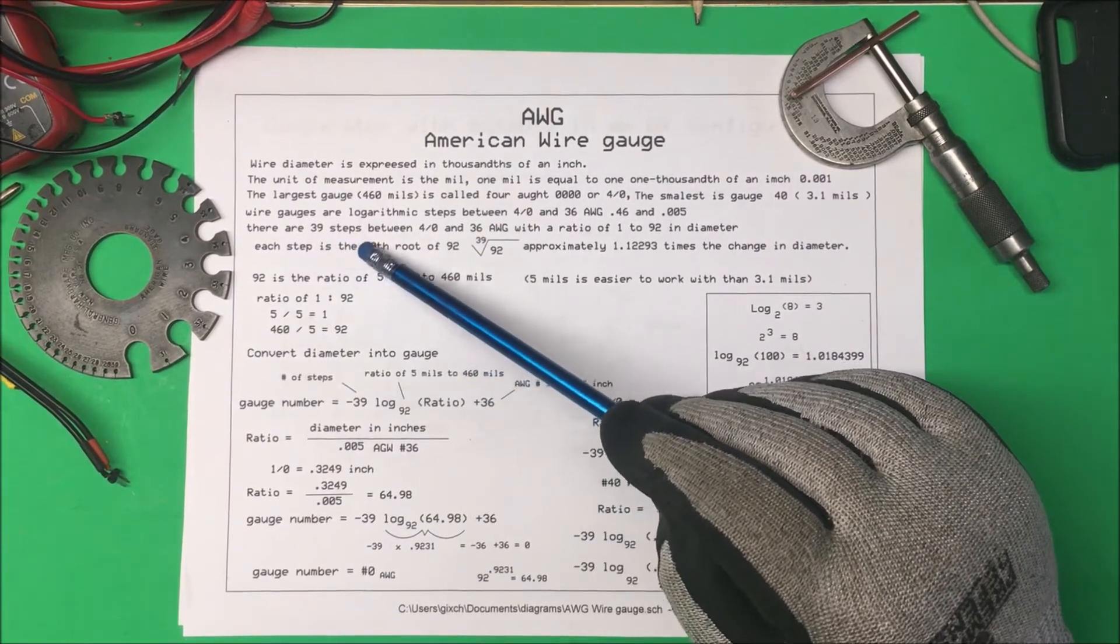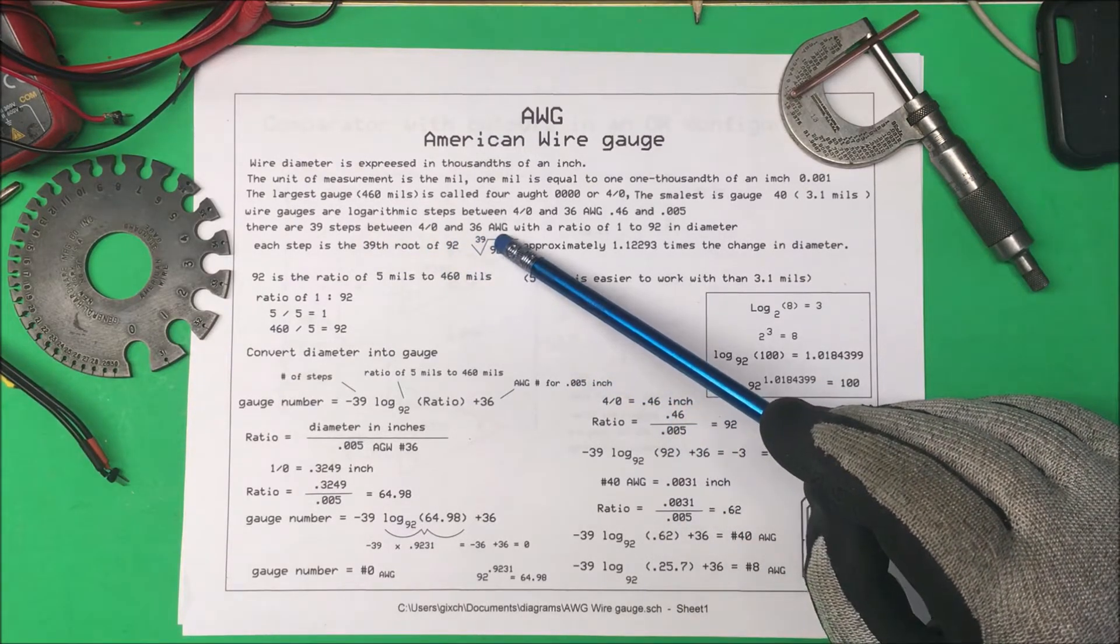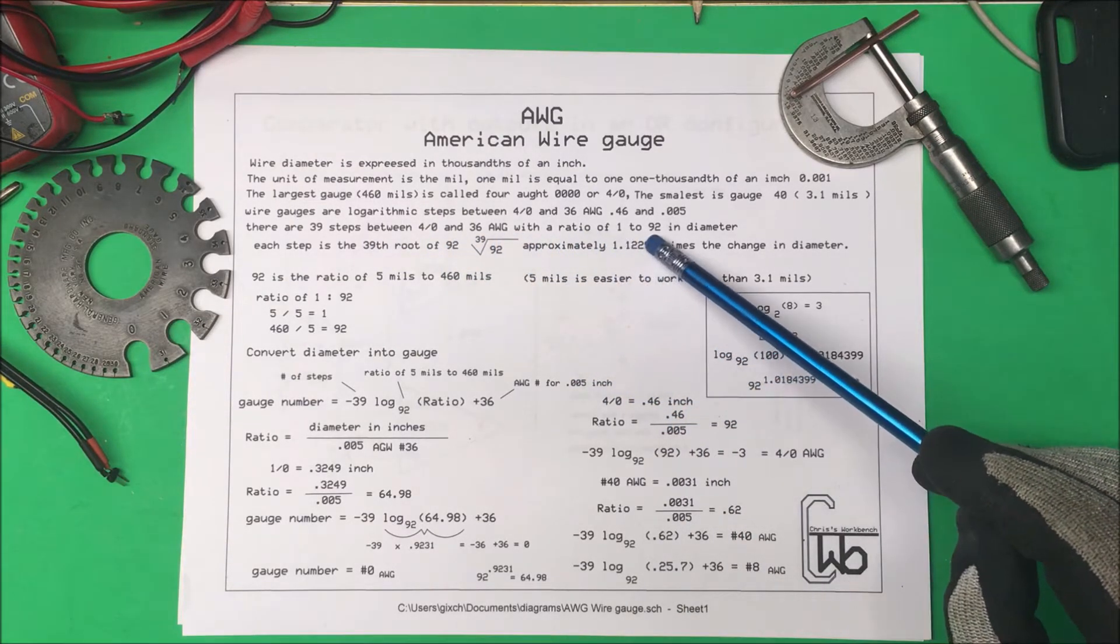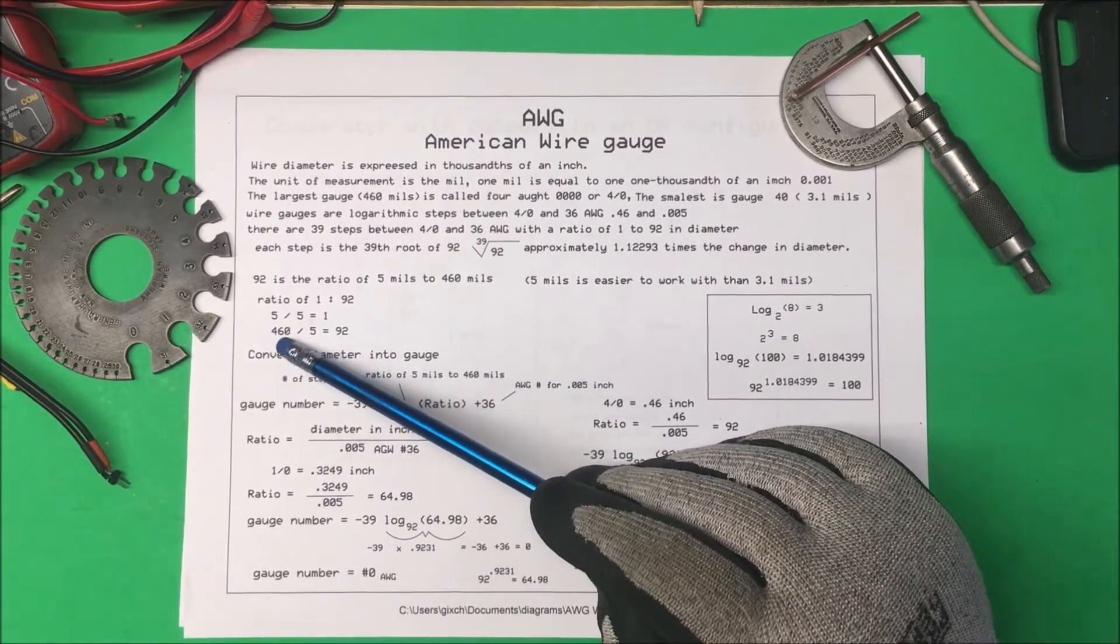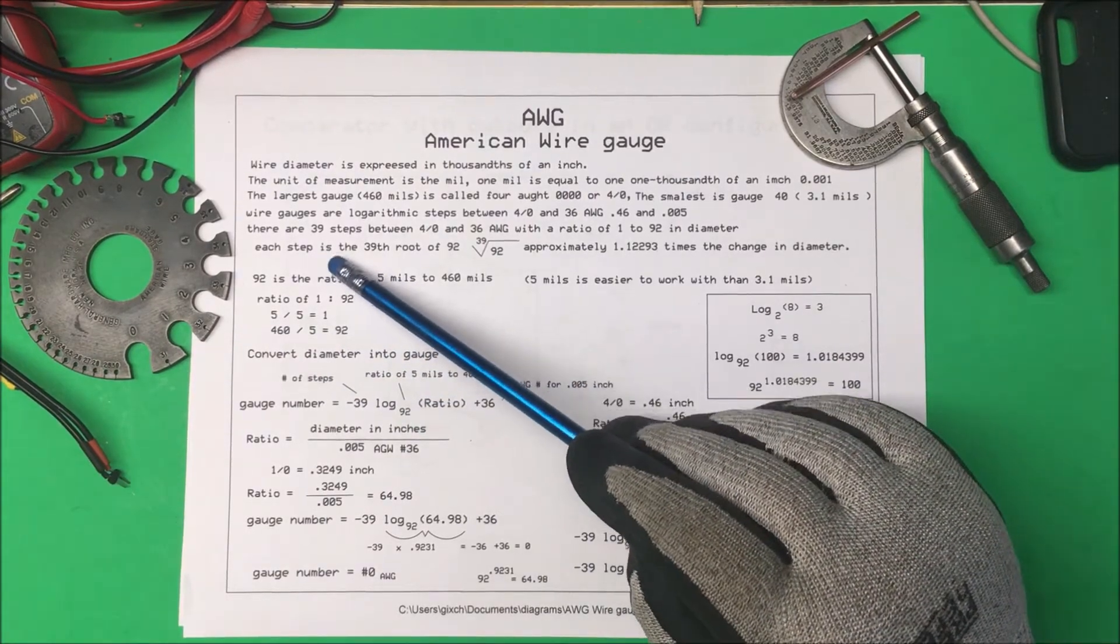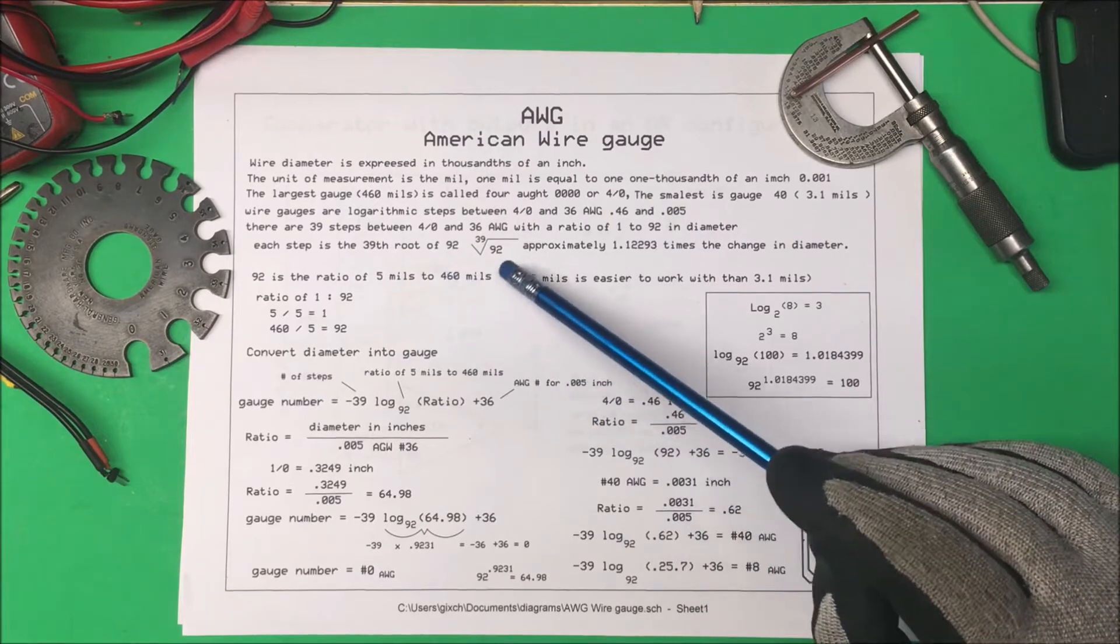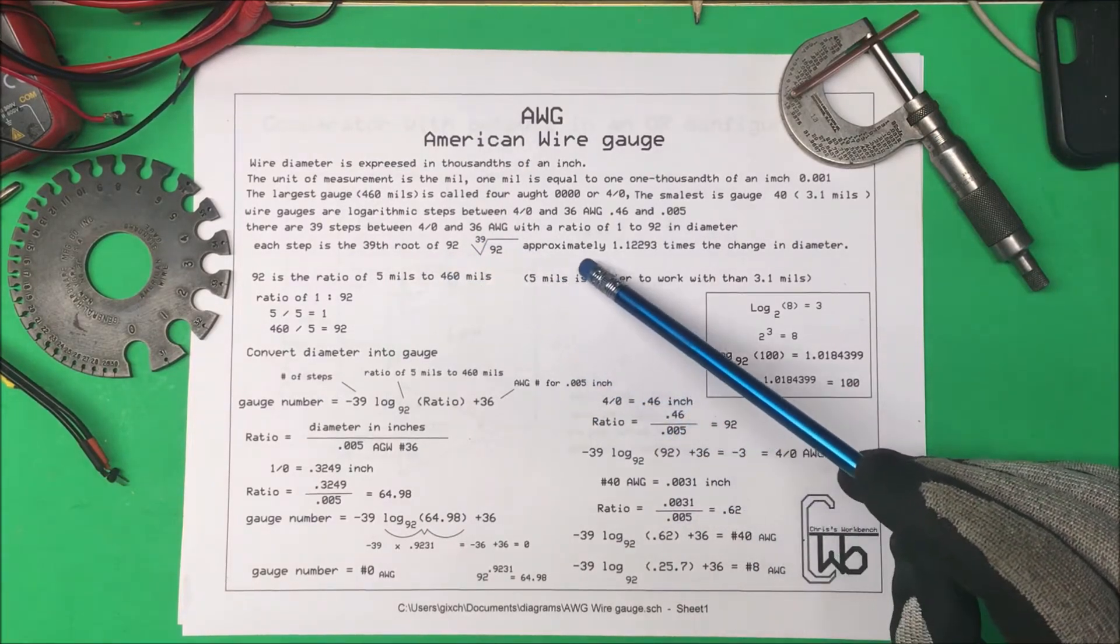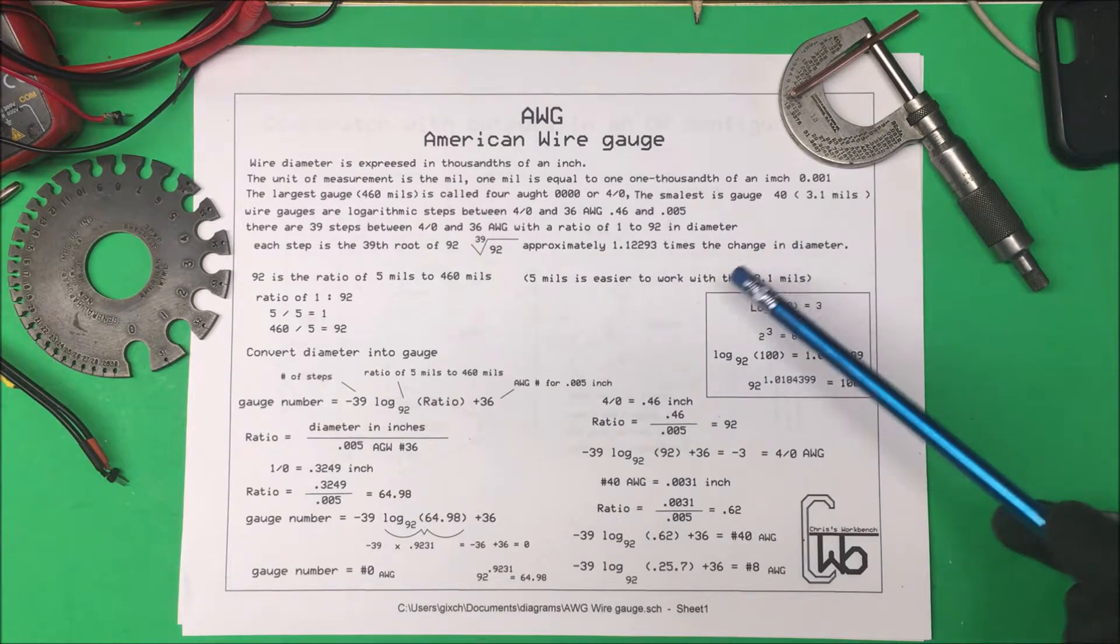There are 39 steps between four aught and 36 AGW with a ratio of 1 to 92 in diameter. That ratio is just 5 divided into 460 that gives us 92 and each step is the 39th root of 92. So it's approximately 1.122 times the change in diameter.